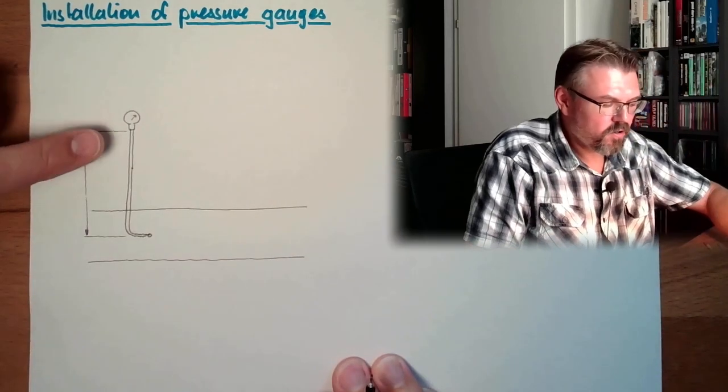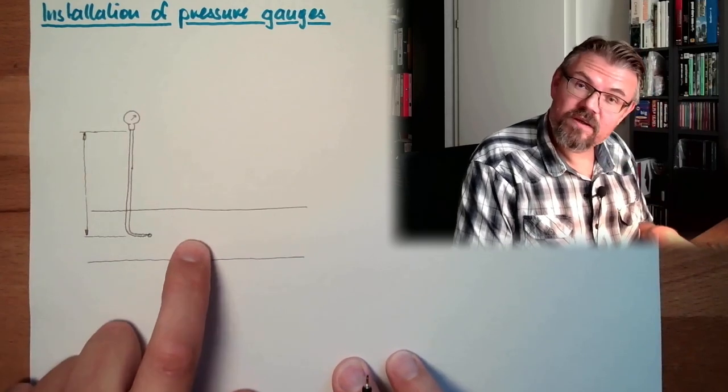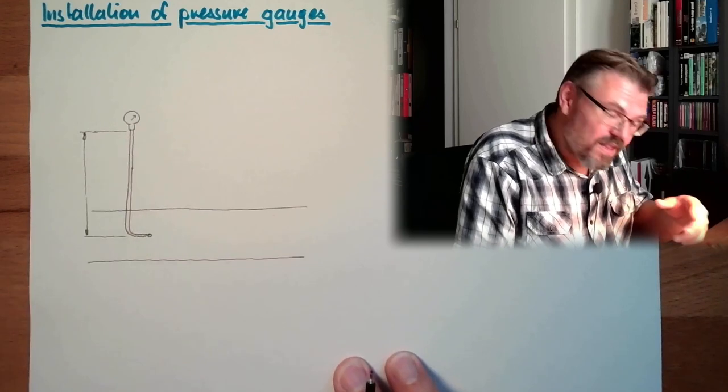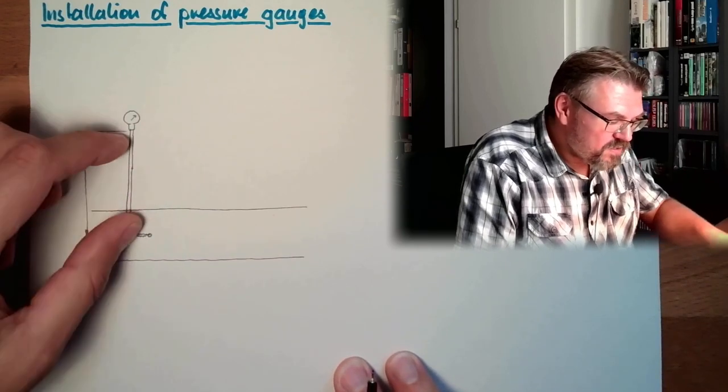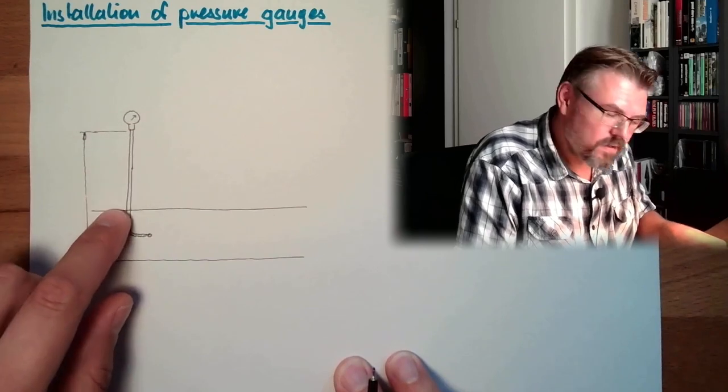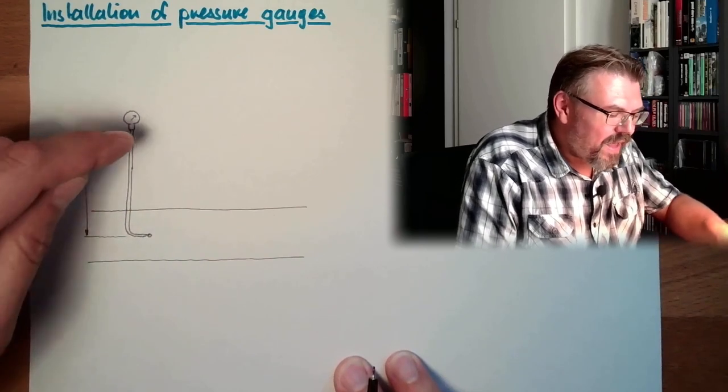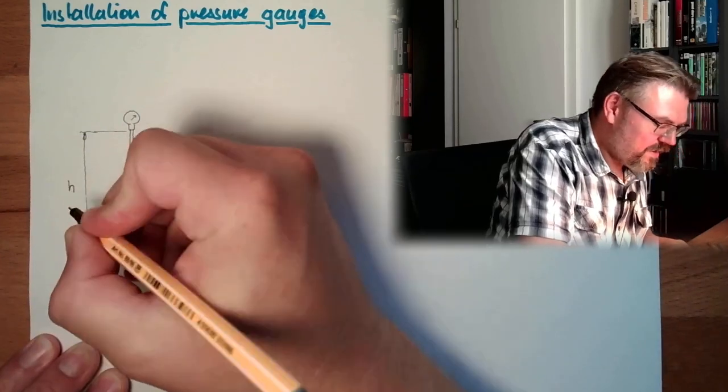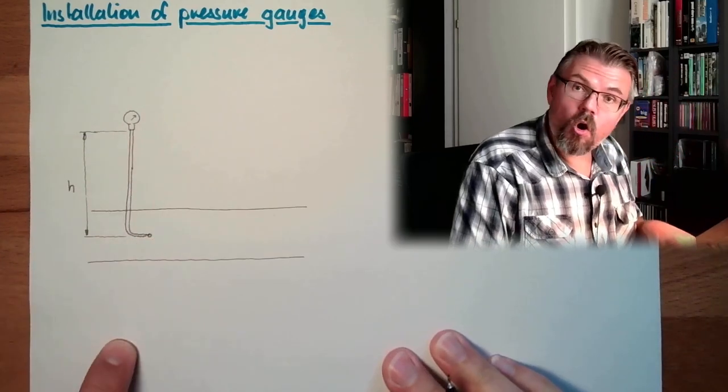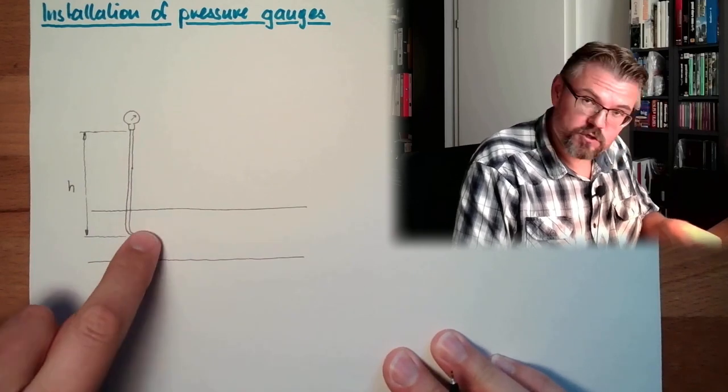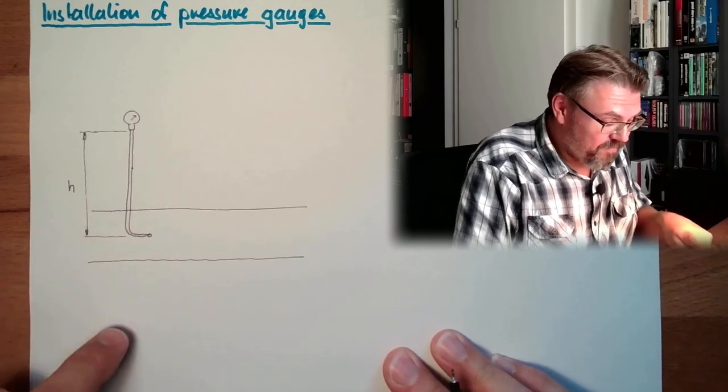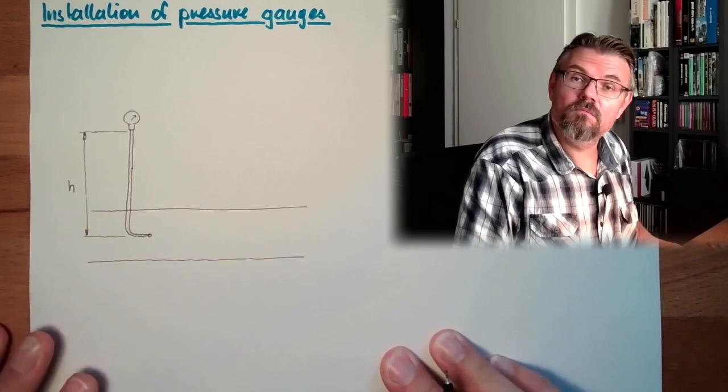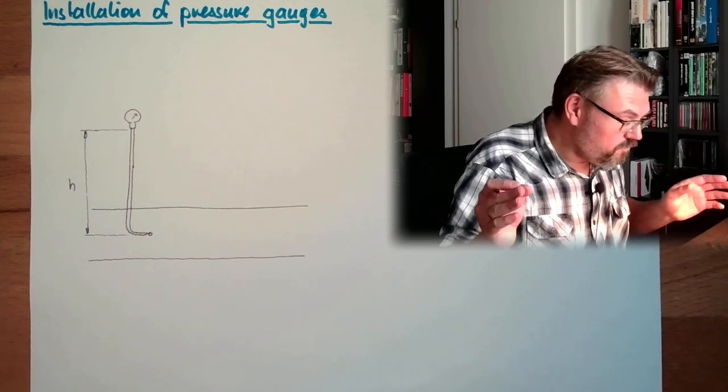This pressure gauge is showing less pressure than actually there is because there is water column, liquid column, gas column which have a certain weight and this weight will pull down. So I will have less pressure up here than here depending on the height. If I mount it below then I measure too much pressure because then I have the pressure here and I have the additional pressure of the weight of this column, whatever fluid this is.